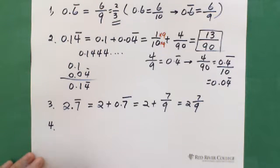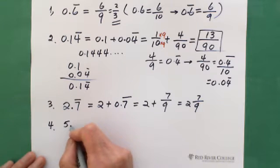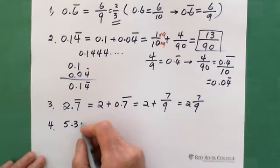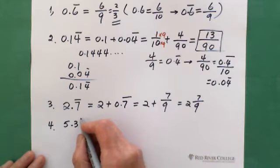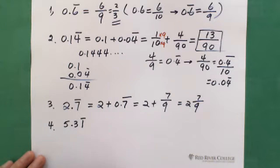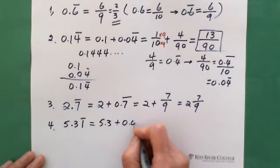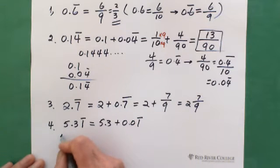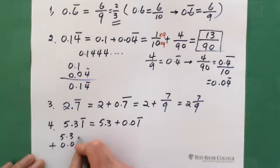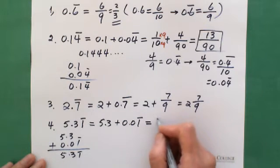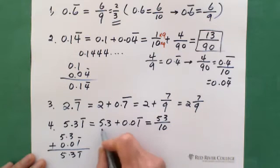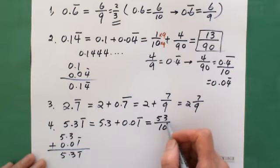Another example: say 5.31 repeating, where only the 1 is repeating. You separate the repeating part from the other part: 5.3 plus 0.01 repeating. Check: 5.3 plus 0.01 repeating gives you 5.31 repeating. Now, 5.3 as a fraction is 53 over 10.